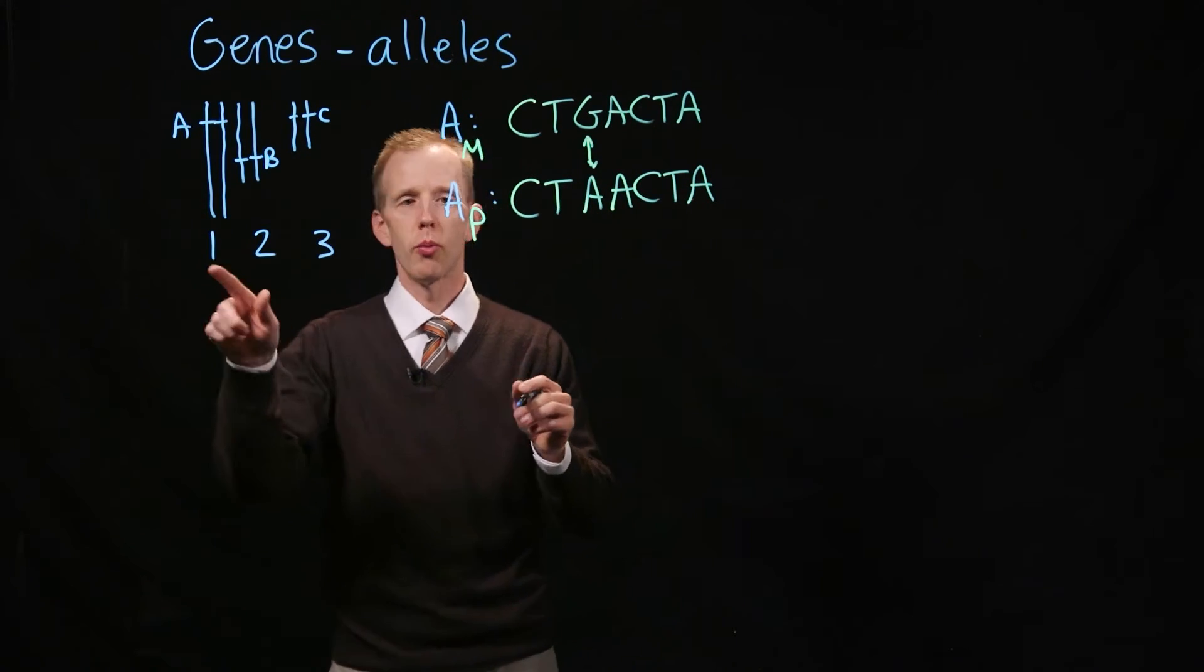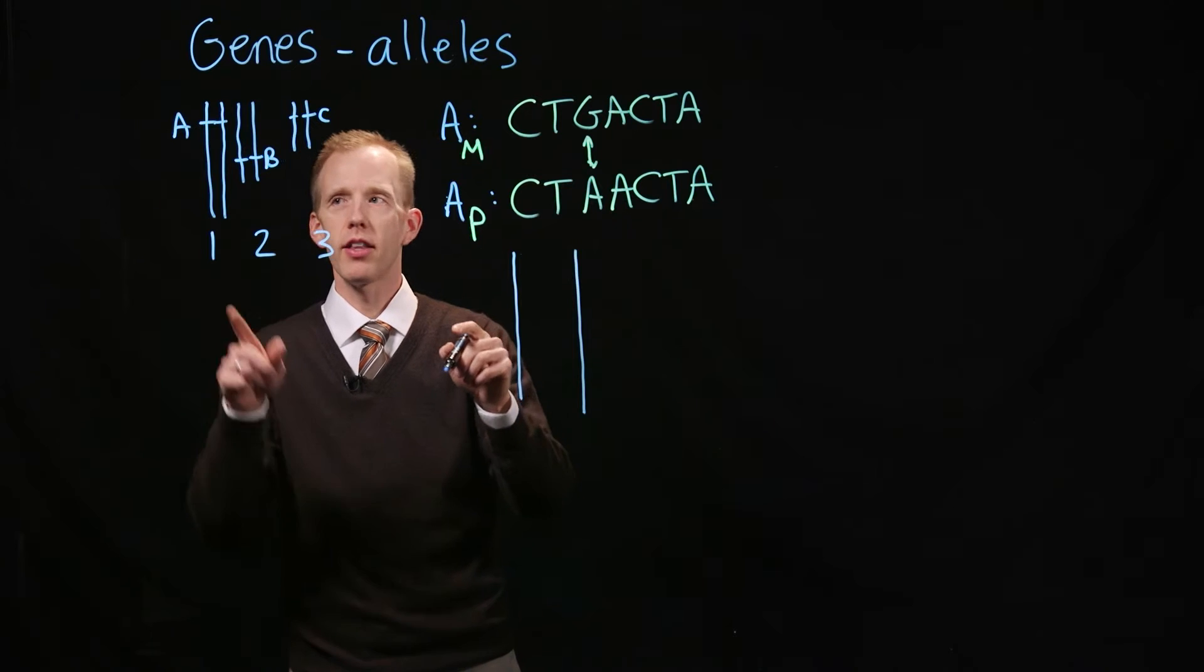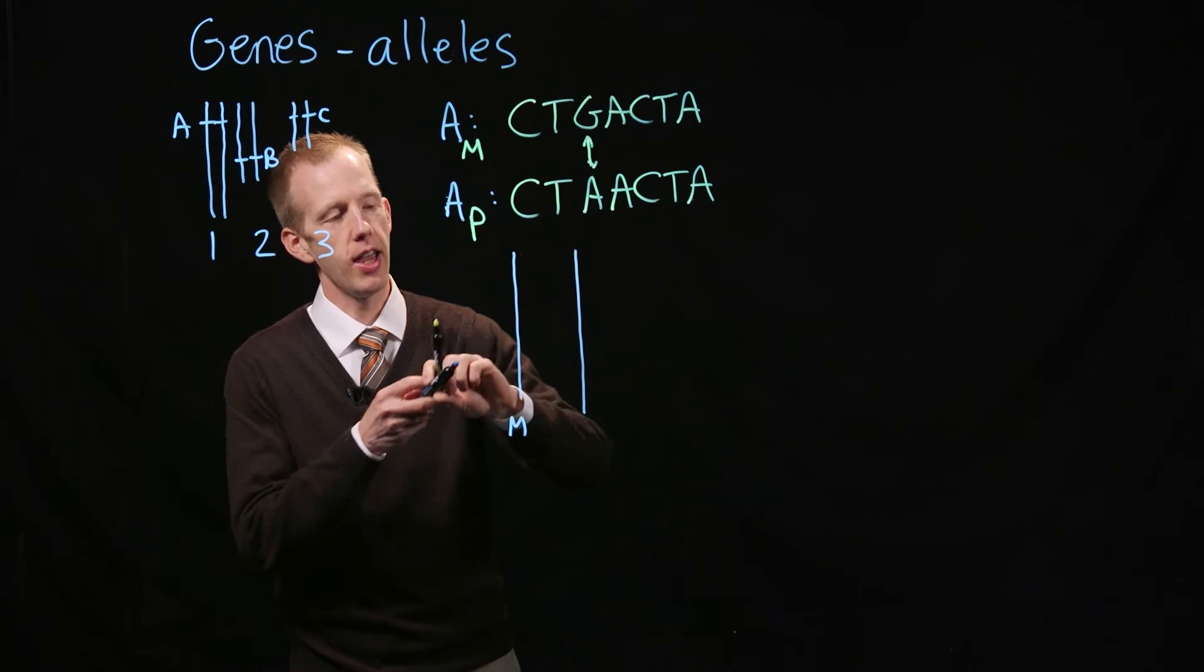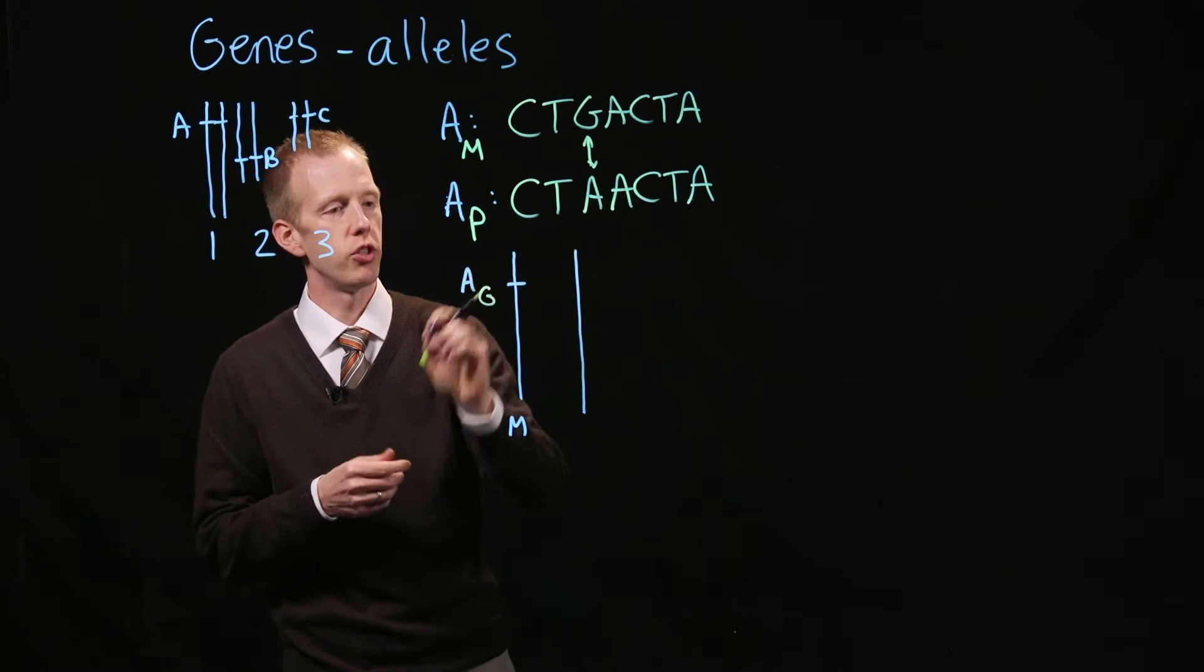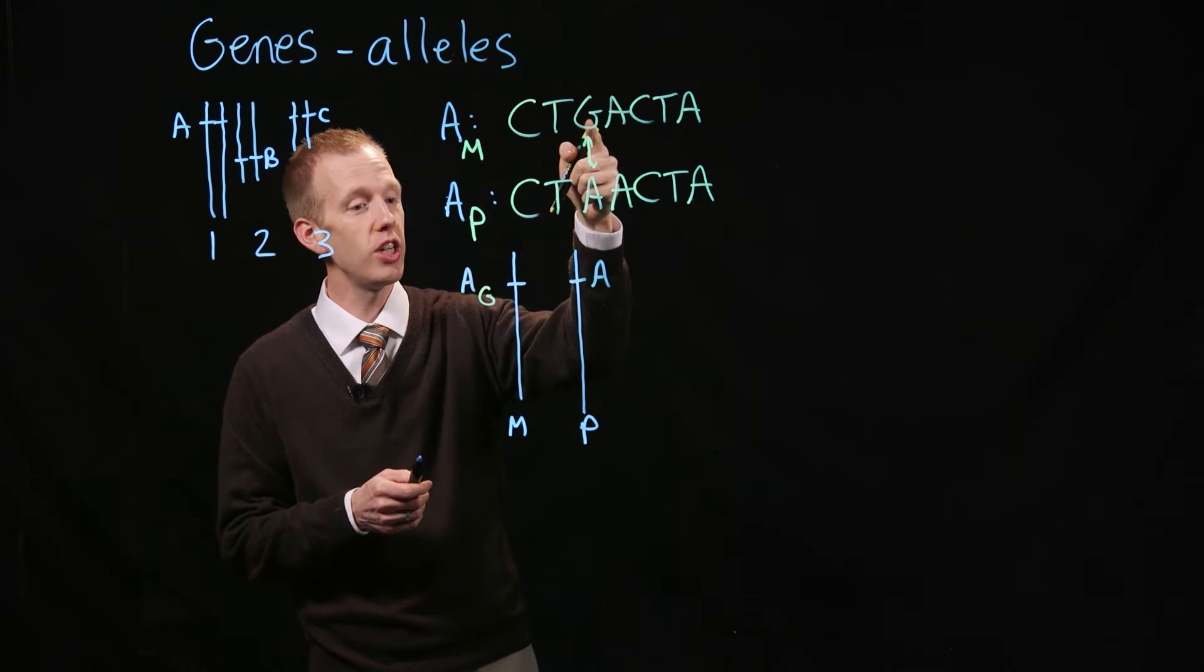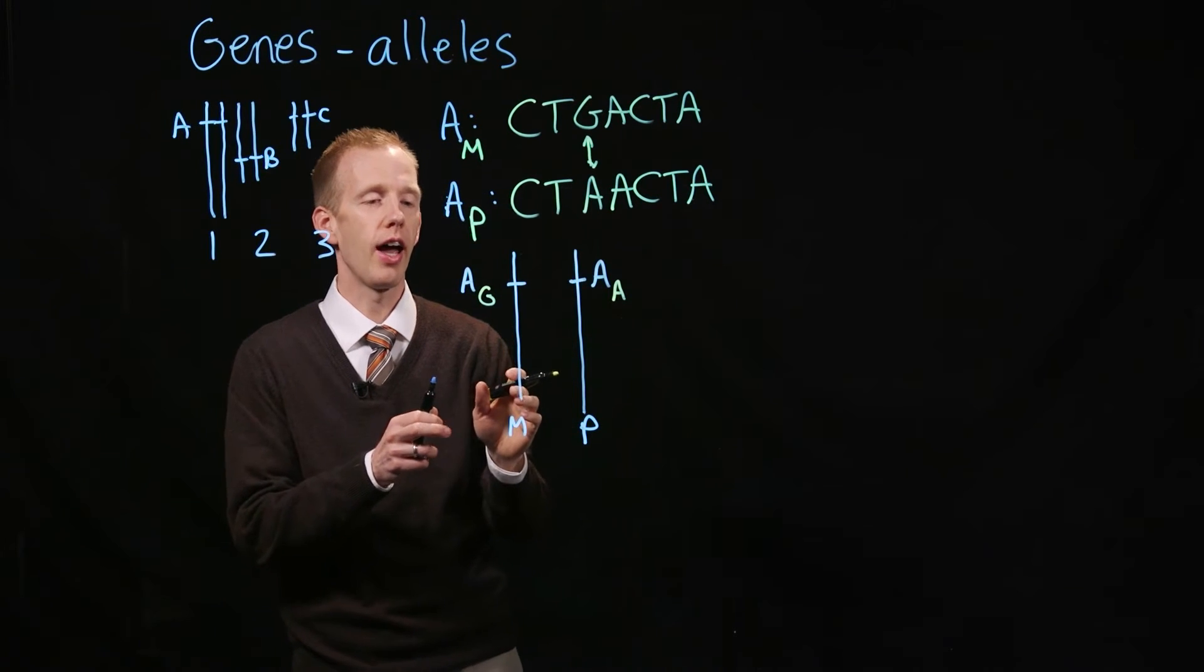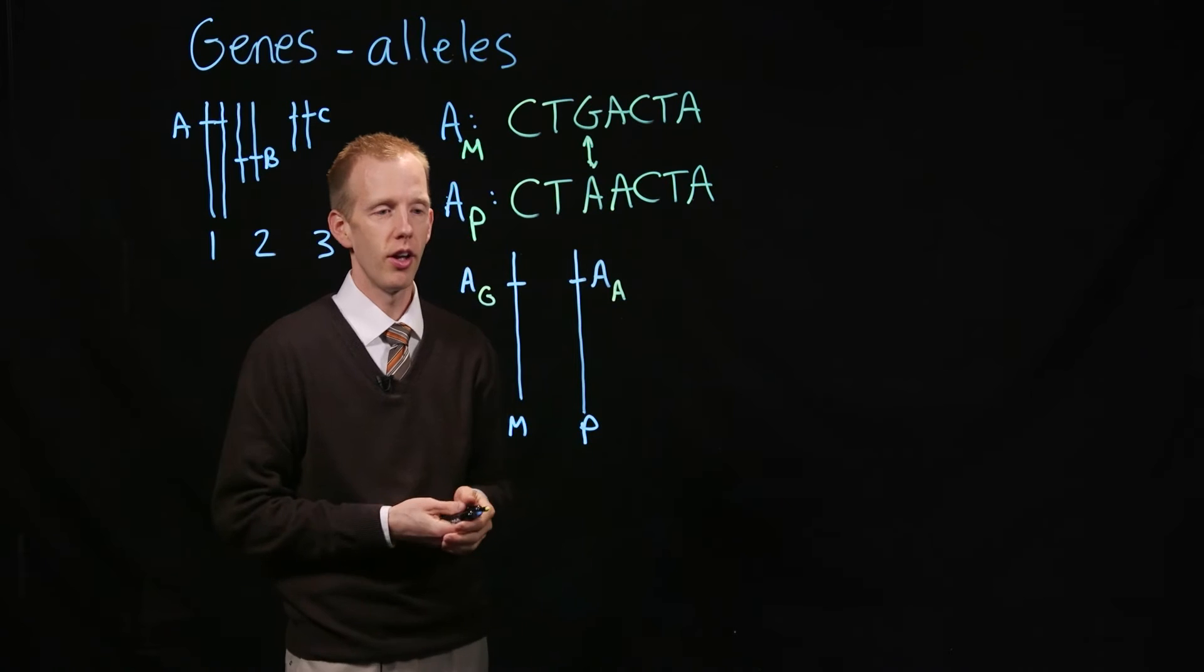If I redrew chromosome 1 in the same orientation, we could identify the maternal version that I inherited as containing a G. Here's gene A with the G allele. The paternal version of that chromosome has gene A, but instead of a G being present from the maternal allele, there's an A. So gene A, allele A. Now we're distinguishing the two versions of this gene that I have according to the nucleotide that's present that distinguishes the maternal and the paternal versions of this chromosome.